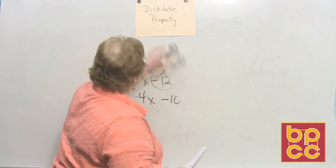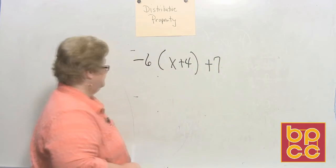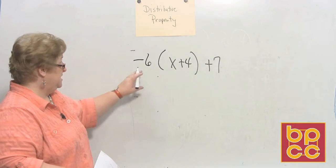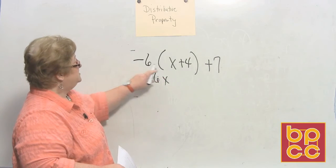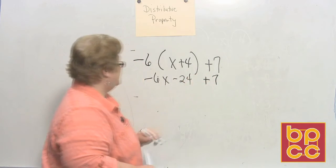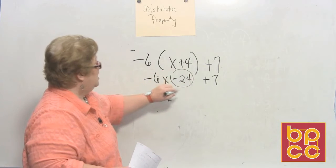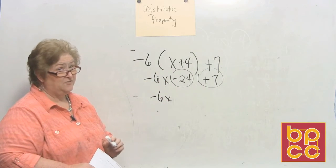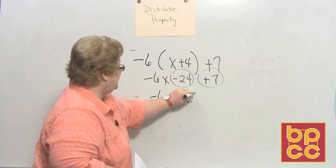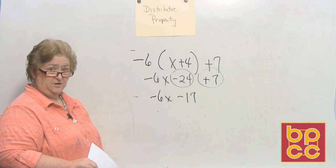Let's try another one similar to that. This time I'm going to do negative 6 times x plus 4, plus 7. Anytime we have a hugger, whether it be a negative sign — which is a negative 1 — or a real number, we're going to multiply first. Negative 6 times x is a negative 6x, and a negative 6 times a positive 4 is a negative 24. Now I'm finished with the distribution, so I must add on the 7, but once I do that I see that I can combine like terms. Negative 6x remains, but I have a negative 24 offset by a positive 7 — more negative than positive — so that's a negative 17. I now have negative 6x minus 17.